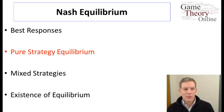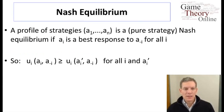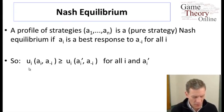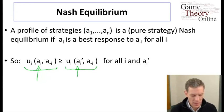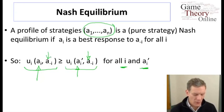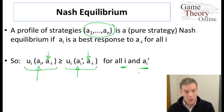With best responses in hand, we can define what a pure strategy equilibrium is. A Nash equilibrium in pure strategies is a profile of strategies — a list of what action each player is choosing, A1 through An — that is a best response for each player against all the others. Simultaneously, each person is choosing an A_i such that their A_i gives a better payoff than any alternative A prime i, and this has to hold for each player and each possible strategy, simultaneously for all players. That's the definition of Nash equilibrium.